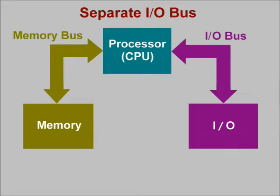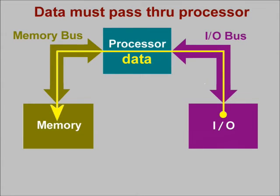Note that the I/O bus and the memory bus are both physically and functionally separate. In other words, an element designed for one of these buses just won't work with the other bus. For instance, an I/O device could not be connected to the memory bus. In this traditional system, our I/O device cannot communicate directly with memory. If the device wants to enter information into memory, the information must pass through the processor, thereby tying it up.